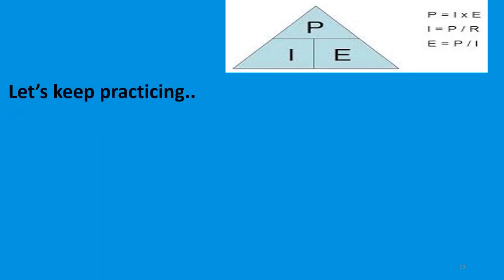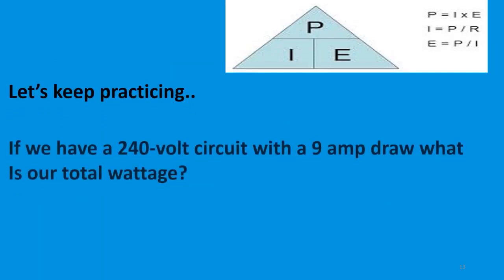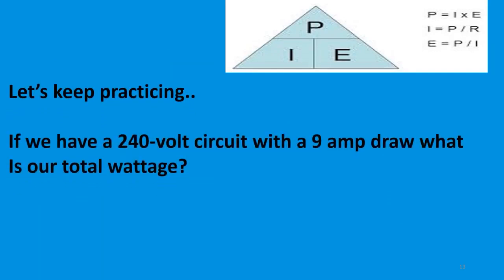Let's keep practicing. If we have a 240-volt circuit with a 9-amp draw, what is our total wattage? We have the amps and the voltage and we're looking for power, so we multiply those together: 9 times 240 equals 2160 watts.